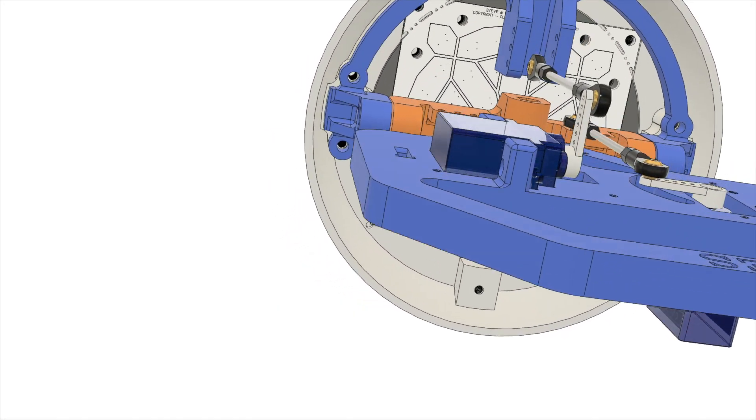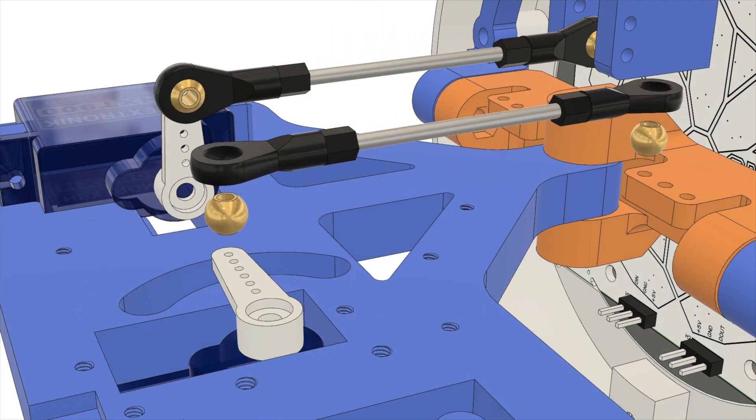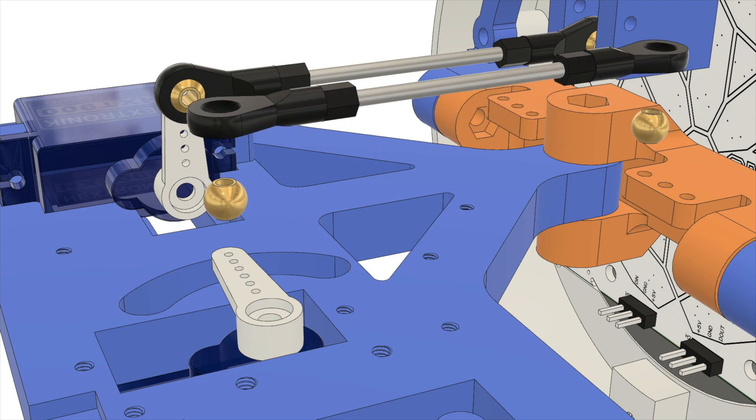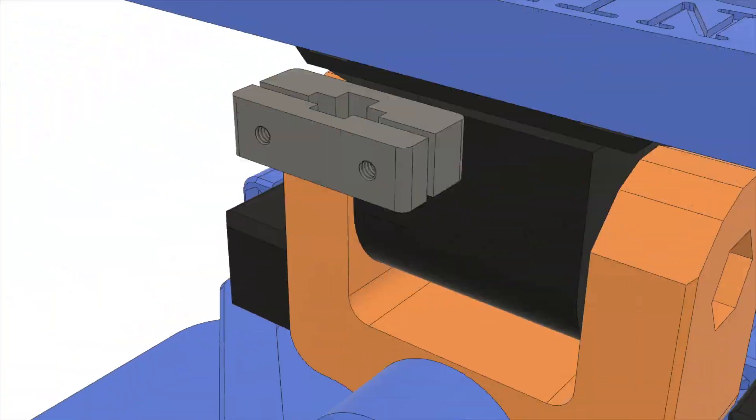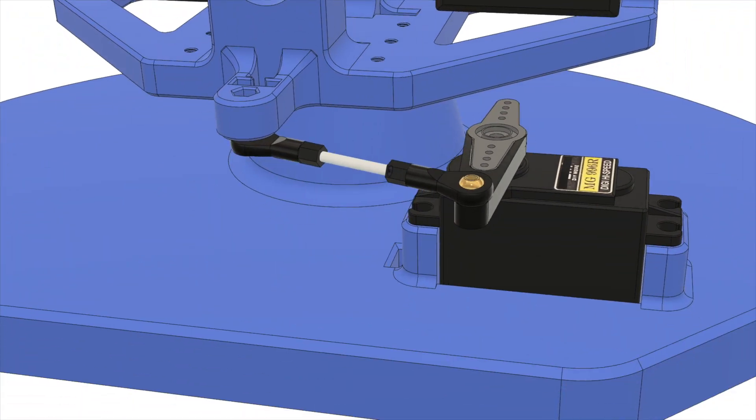Another difference is that I've implemented rod-end ball joints and 2mm stainless steel rods to make the servo linkages. As my model is quite heavy, these linkages will be much sturdier than 3D printed versions and have better freedom of movement.